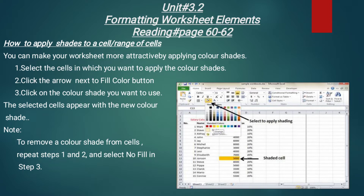The reading page is 62. First of all, how to apply shades to a cell or range of cells? एक cell पर या range of cells पर shades का استعمال — उन पر shades को किस तरह apply किया जाता है? You can make your worksheet more attractive by applying color shades. आप अपनी worksheet ज्यादा दिलचस्प बना सकते हैं by applying color shades to a single cell या range of cells.